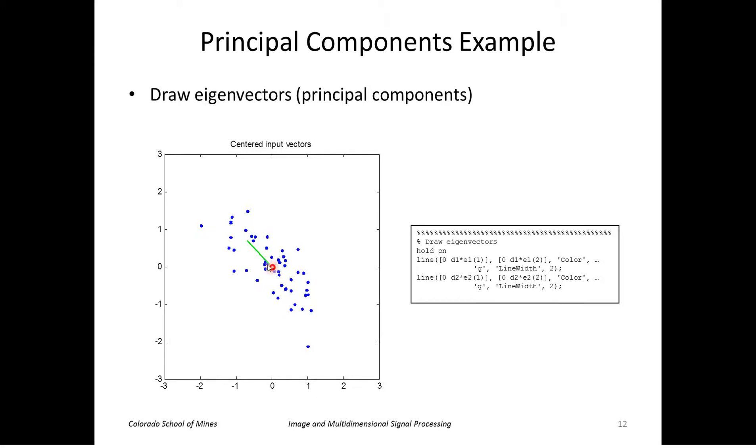You can see that the first eigenvector, the first principal component, is the one corresponding to the direction along which I have the most variation of the input data. The second principal component is perpendicular to that, and in this case it's the direction in which there is the least variation.